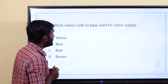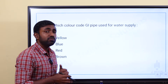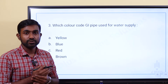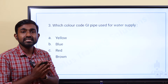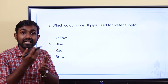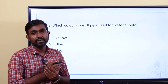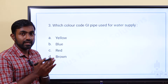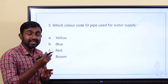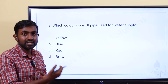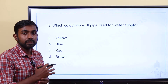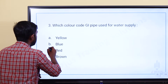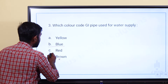Which color code G.I. pipe is used for water supply? G.I. — galvanized iron pipe — in the water supply system, what grade or color do we use? Option A: yellow. Option B: blue. Option C: red. Option D: brown.